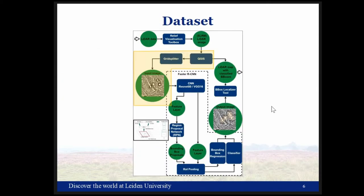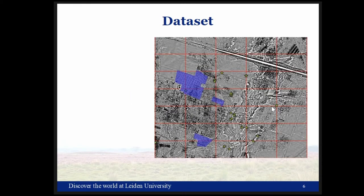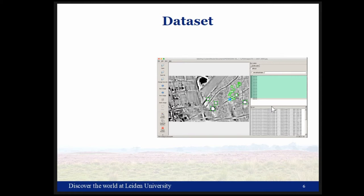The next step was to build a dataset with training, validation, and testing subsets. The dataset was developed to be comparable in image size and organization to the well-known Pascal VOC object classification dataset, which is regularly used as a benchmark for neural networks. All LiDAR data was split into subtiles measuring 1,000 by 600 pixels — the same image size as Pascal VOC — in QGIS, and known archaeology from several databases was plotted and labeled using LabelImg.